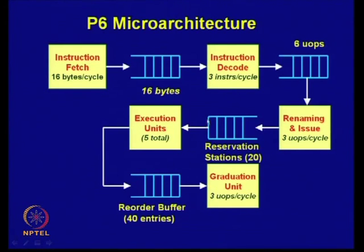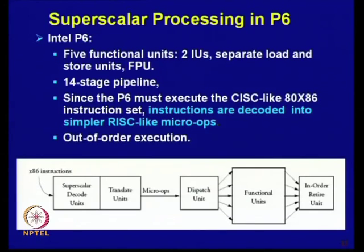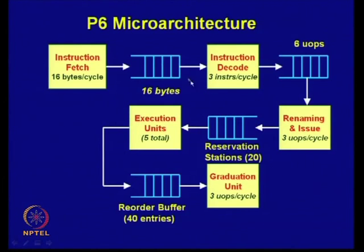The micro-operations go to the reservation stations, where there are 20 entries (20 buffers). From these reservation stations, they go to the five total functional units, including one floating point unit, as well as separate load/store units.